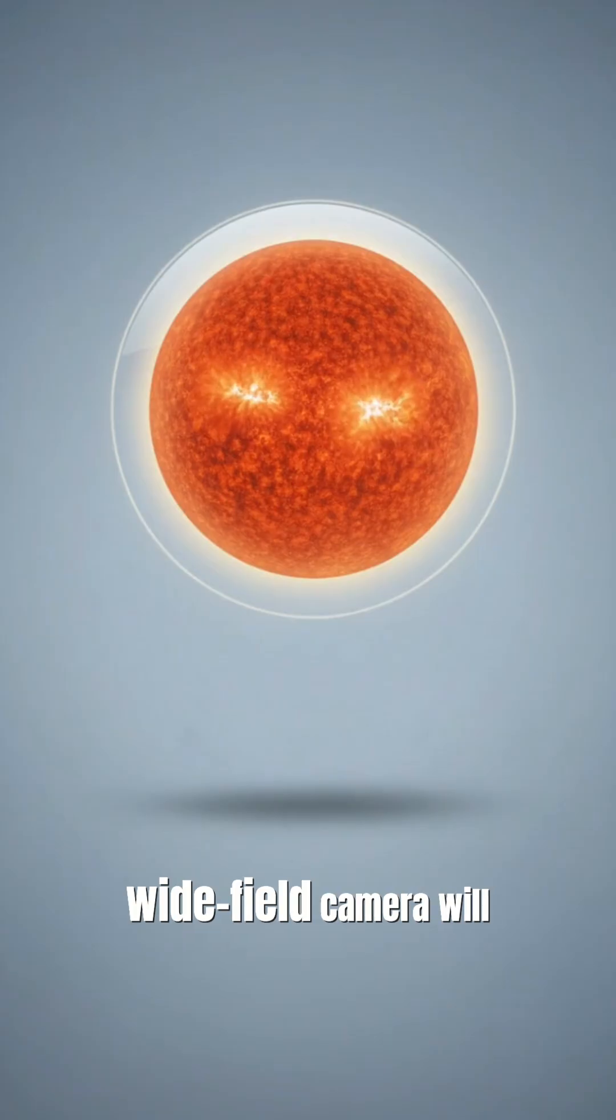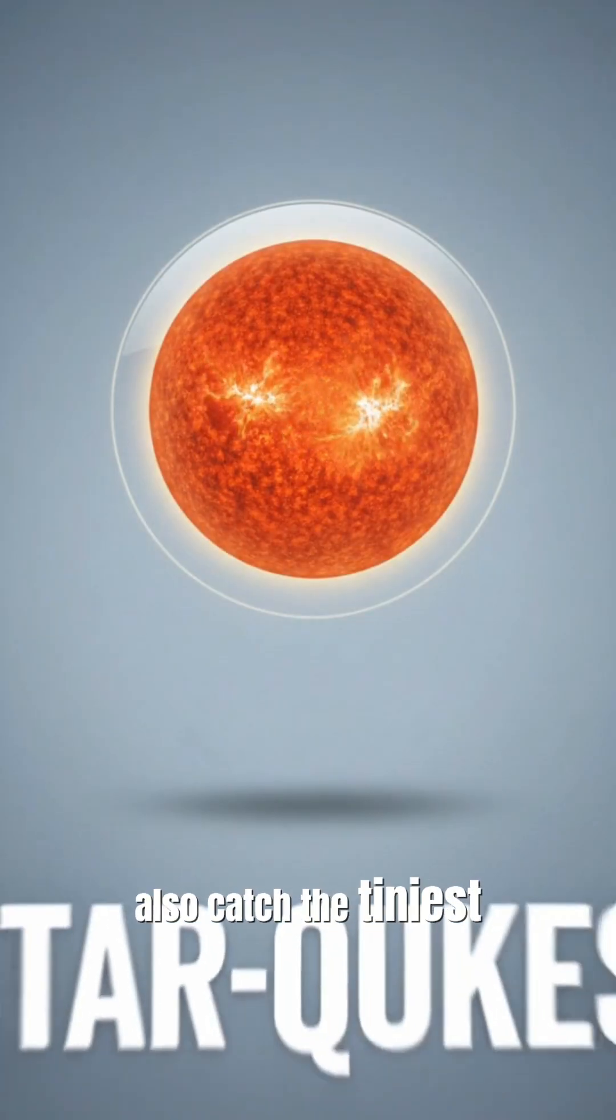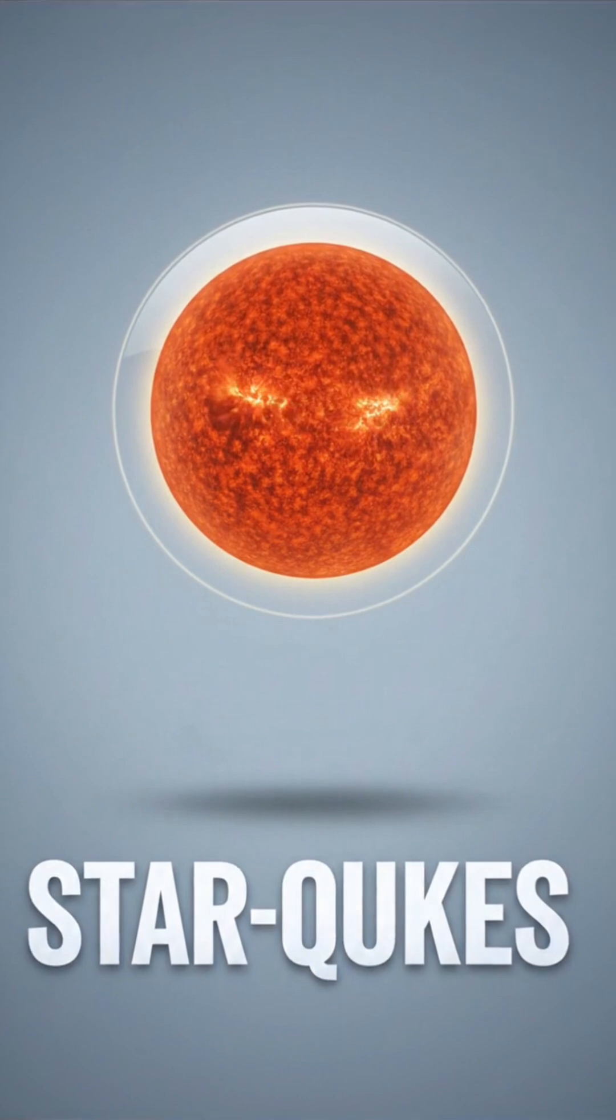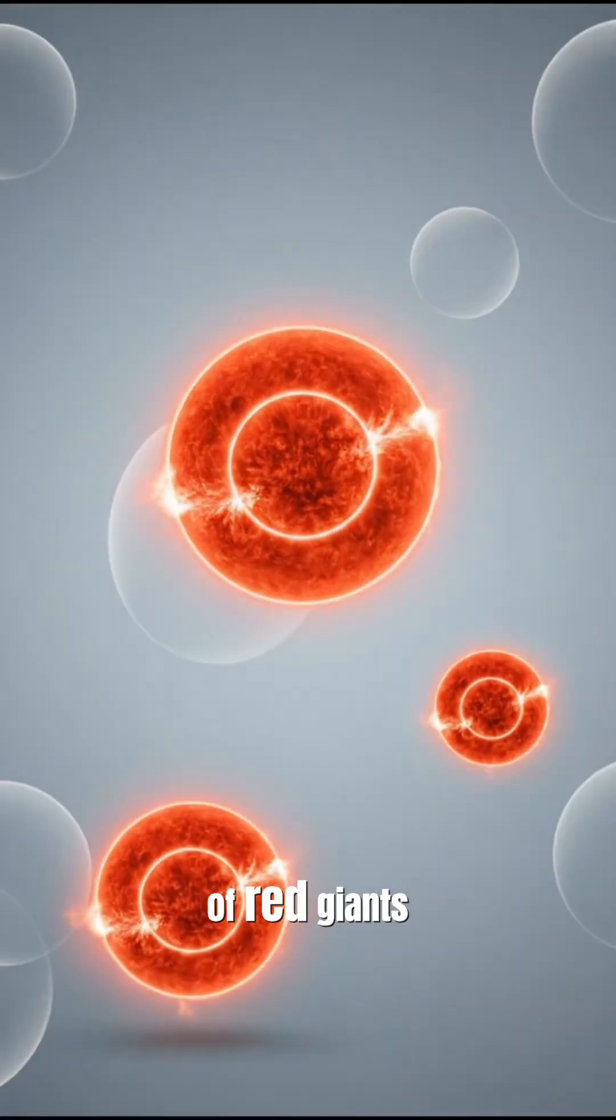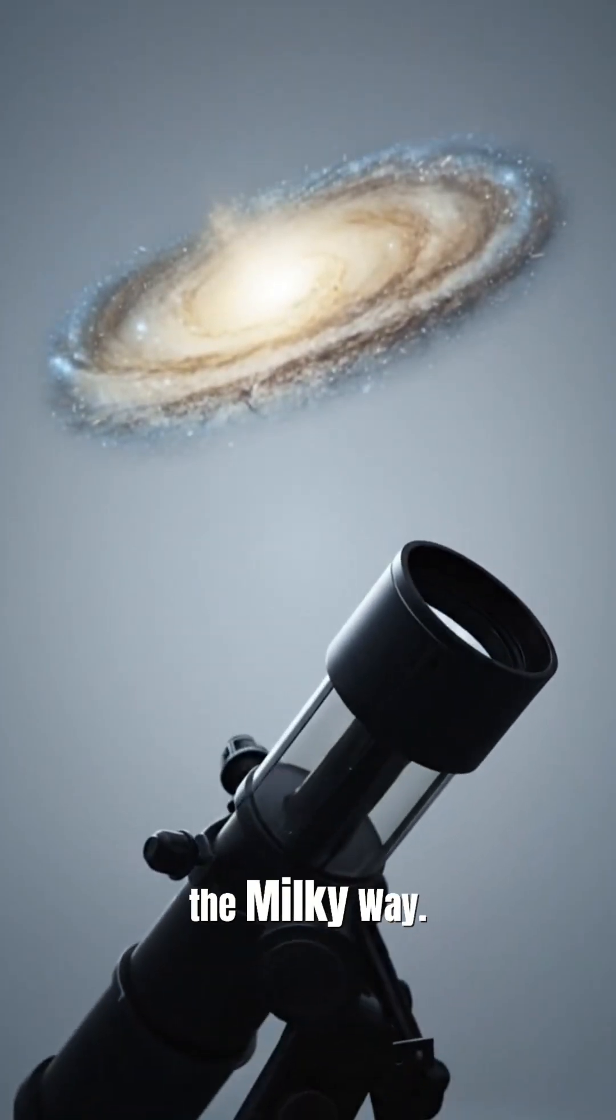Roman's ultra-stable, wide-field camera will also catch the tiniest flickers in starlight—starquakes rippling through hundreds of thousands of red giants in the crowded heart of the Milky Way.